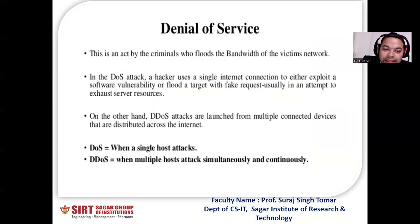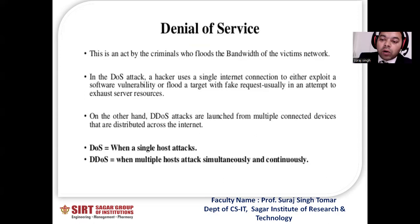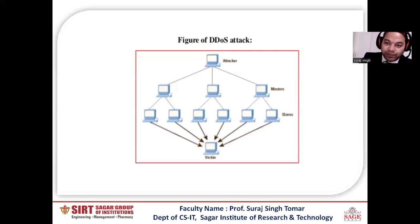Another type is denial of service. This is an act by criminals who flood the bandwidth of the victim's network. In a DOS attack, a hacker uses a single internet connection to either exploit a software vulnerability or flood a target with fake requests, usually in an attempt to exhaust server resources. On the other hand, DDoS — distributed denial of service — occurs when multiple hosts attack simultaneously and continuously. As depicted in the figure, one attacker can direct through a master, and the master can deliver commands to slaves, which then directly attack the victim.